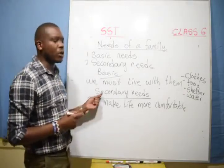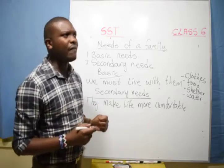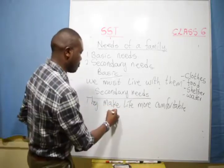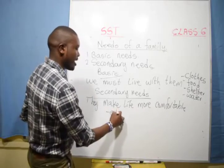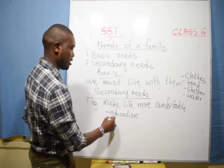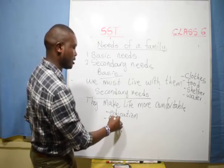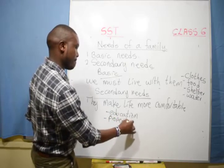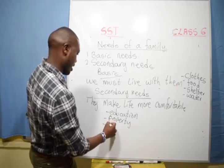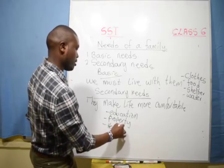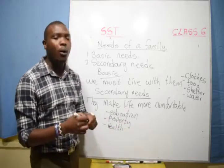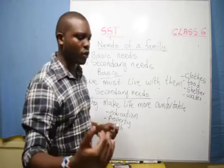Then the secondary needs — these are things that make life more comfortable. We have examples: education, family, property, health. These we can live without; they are just making our life more comfortable.